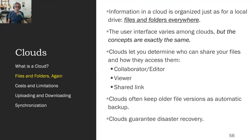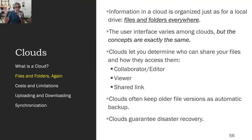You can say, I wrote this document but I want my team to be able to edit it or change it. Or you can say, I wrote this document and I want the people on my team just to be able to look at it. Or you can send a link to people and say you can look at this, but you can't look at anything else in that folder. So most clouds let you determine what's called access control — meaning who gets to look at it, who gets to do what to it.